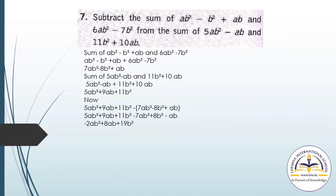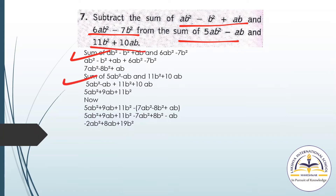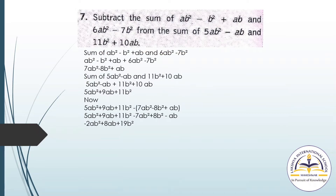Question number 7: Subtract the sum of ab² minus b² plus ab, and 6ab² minus 7b², from another term. First find the sum of the first and second expressions, then find that combined sum. Then subtract: 5ab² plus 6 plus 9ab plus 11b² minus 7ab² minus 8ab² plus ab. Then you will get your answer.